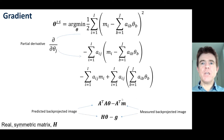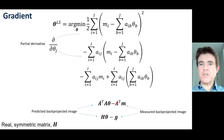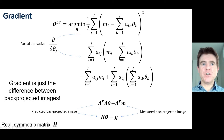Because we are computing A transpose A, that product is a real symmetric matrix — since A is a real matrix, A transpose A is symmetric. We relabel A transpose A as H, and relabel A transpose m (the back-projected data) as the vector g. The gradient vector is then this difference of back-projected images (H theta minus g), and that tells us which direction we need to go in for the least squares algorithm we are about to present.